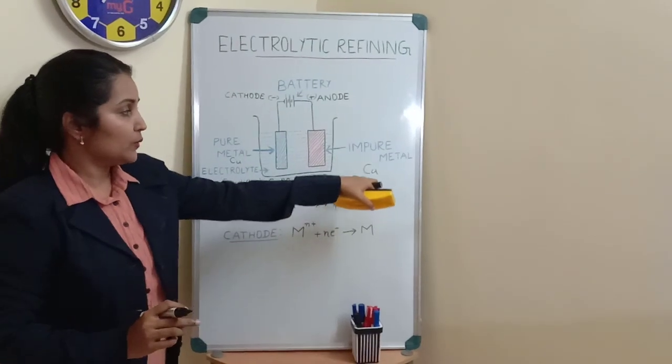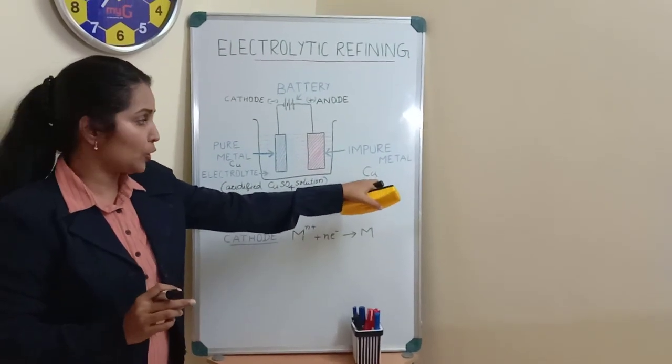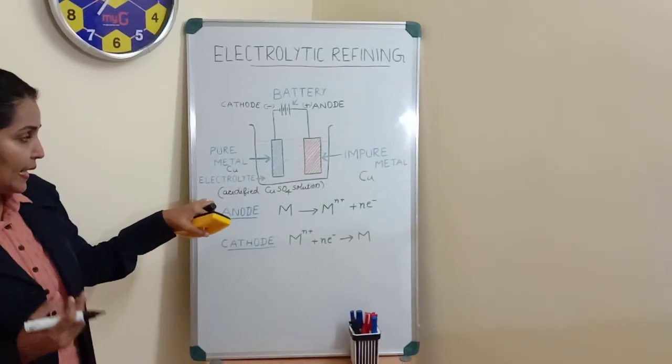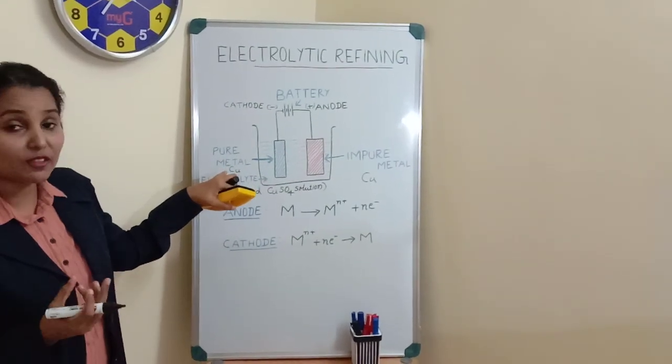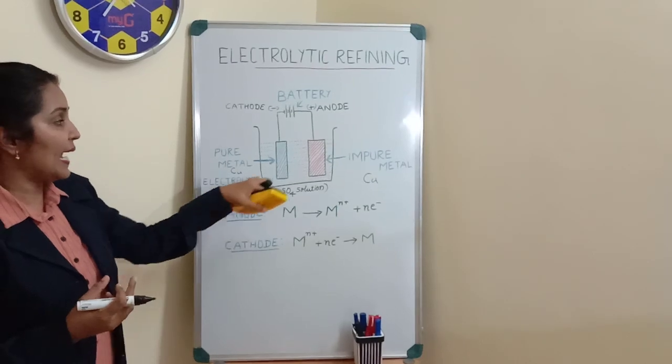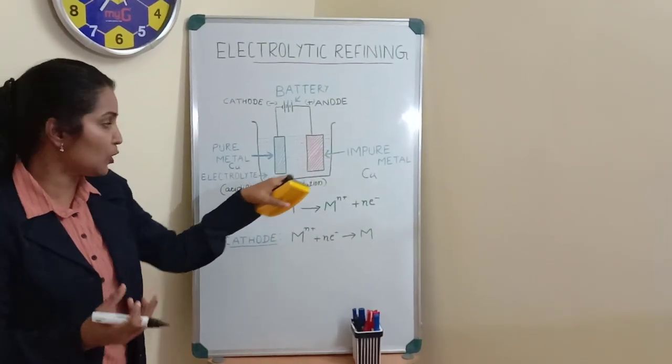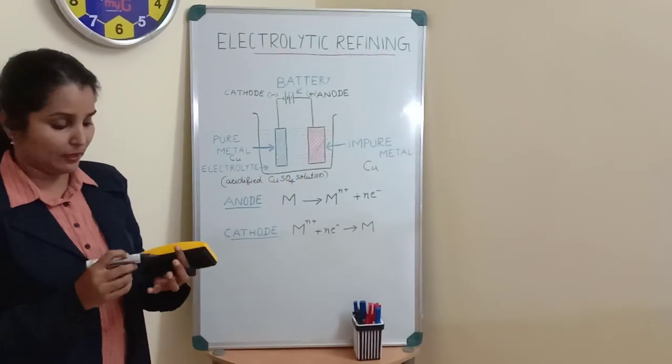The anode will be an impure copper strip, and the cathode will be a pure fine strip of copper. The electrolyte solution, containing the soluble salt of copper, will be acidified copper sulfate solution.